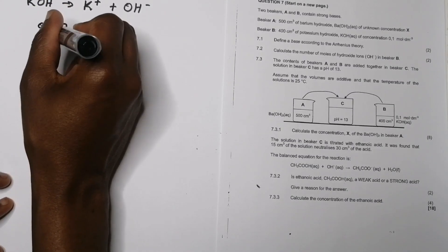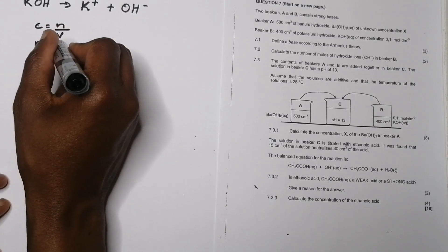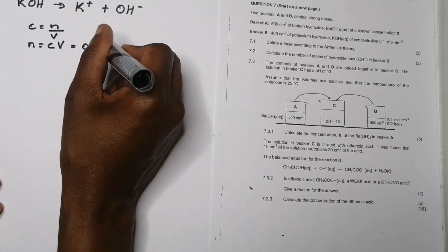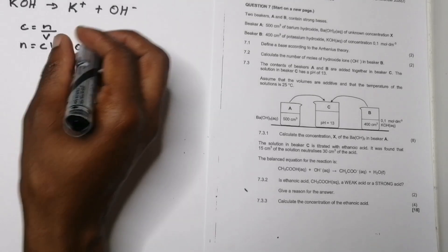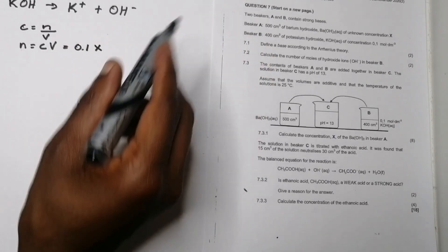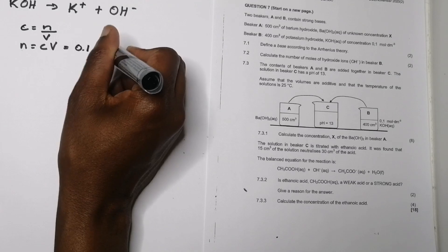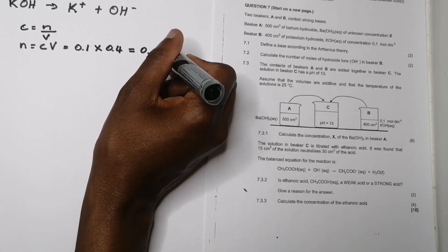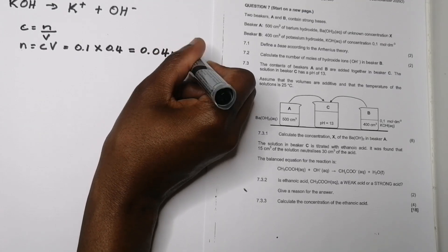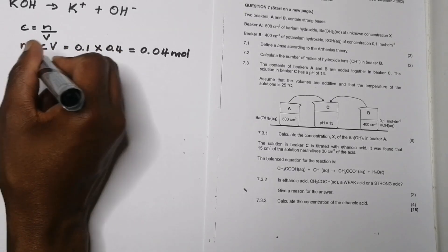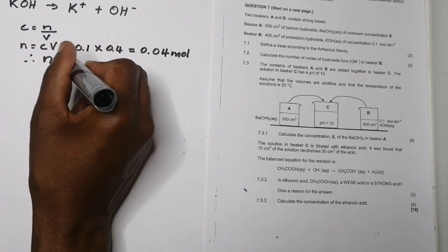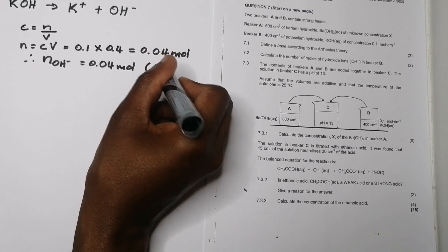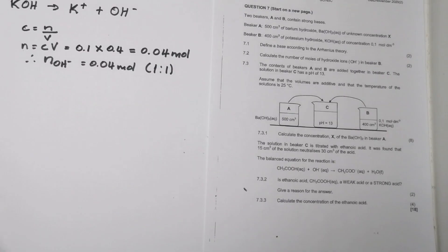Using n = C × V: concentration is 0.1 mol·dm⁻³ and the volume is 400 cm³, which we convert to dm³ by dividing by 1000 to get 0.4 dm³. So n(KOH) = 0.1 × 0.4 = 0.04 mol. Therefore, the number of moles of hydroxide ions is also 0.04 mol, because of the 1:1 ratio with KOH.